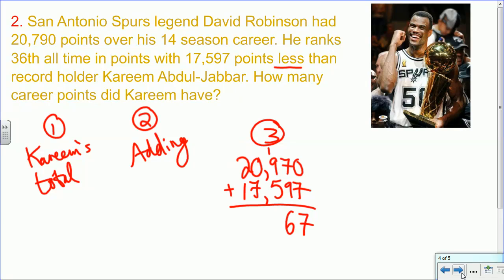In the hundreds place, we'll have 9 plus 1 is 10. Those are compatible numbers, and then 5 more is 15, but 10 hundreds equals 1,000, so we'll carry that. Then we have 7,000s, and 1 more 1,000, that's 8,000s, and then 2 10,000s, and 1 more 10,000 would be 3 10,000. So Kareem Abdul-Jabbar has 38,567 career points.